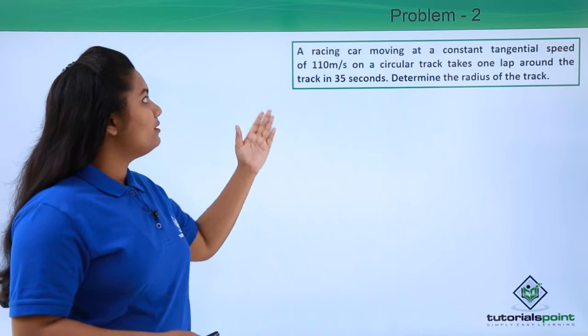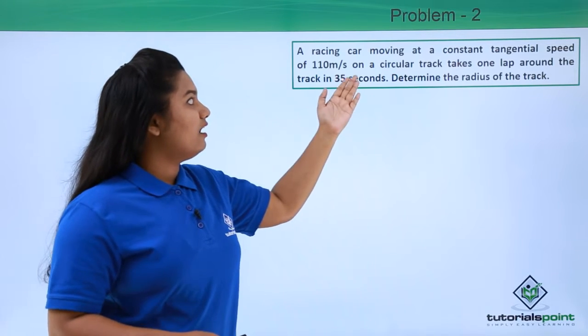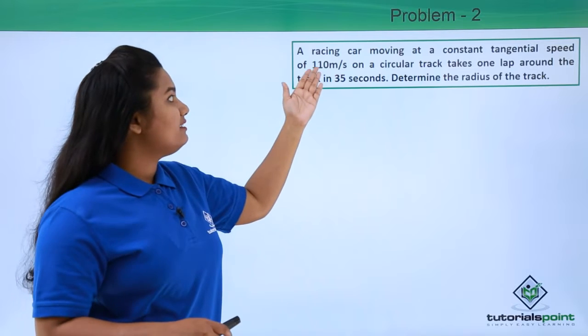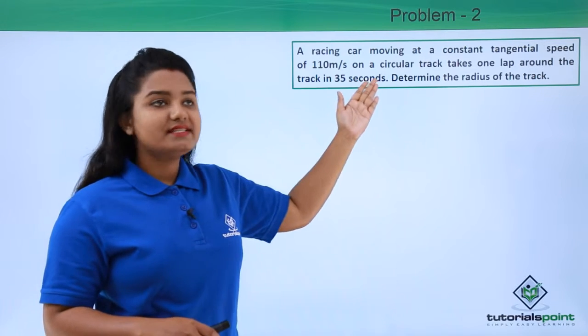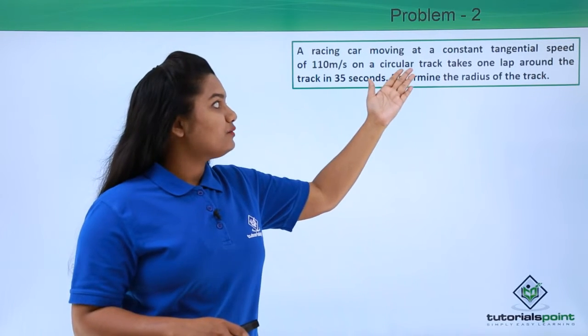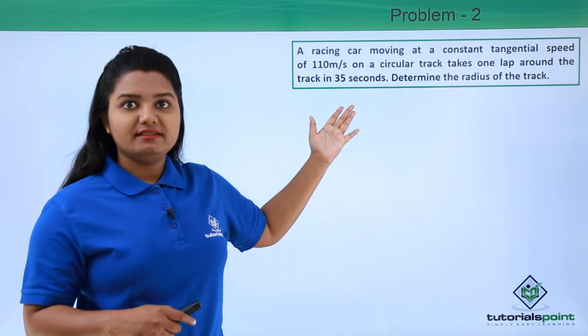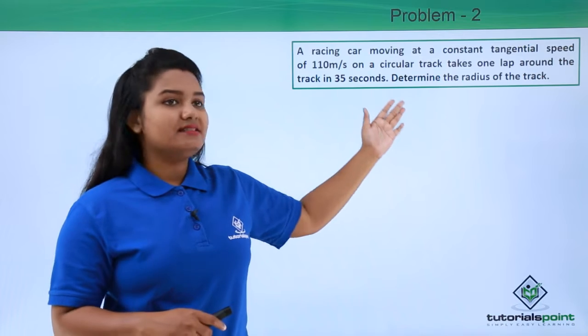So here is the problem which reads: a racing car moving at a constant tangential speed of 110 meters per second on a circular track takes one lap around the track in 35 seconds. Determine the radius of the track.